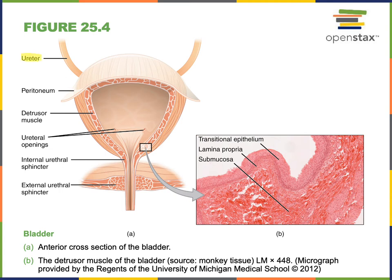The ureters open at the ureteral openings, and then urine flows out of the urinary bladder through the urethra. There is a triangular region between the ureteral openings and the urethra, highlighted here, known as the trigone.